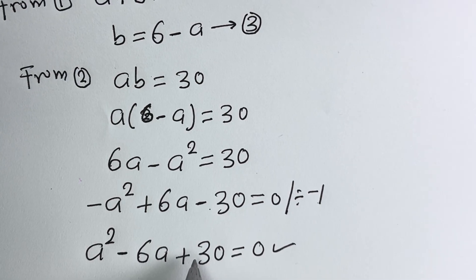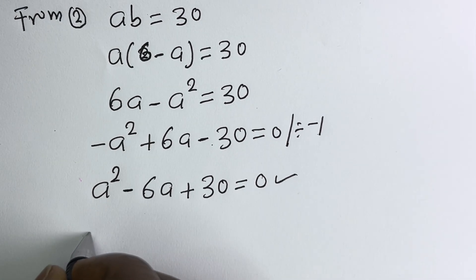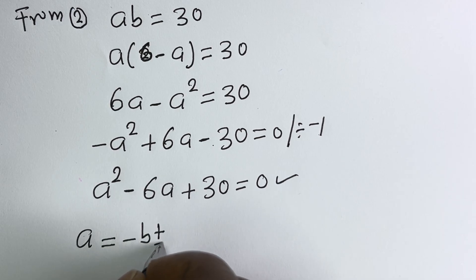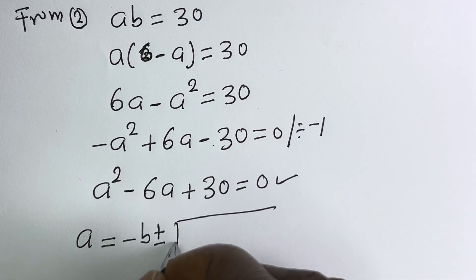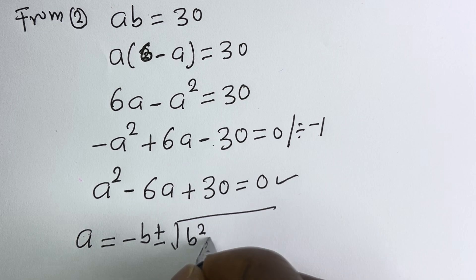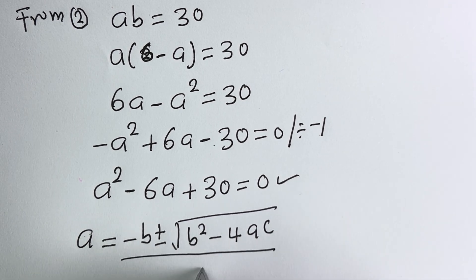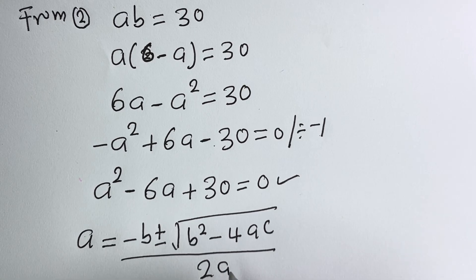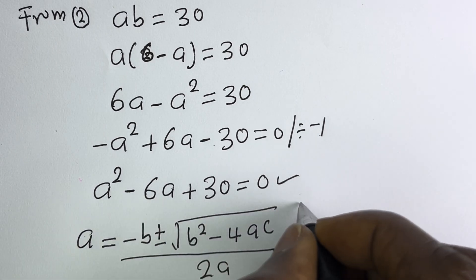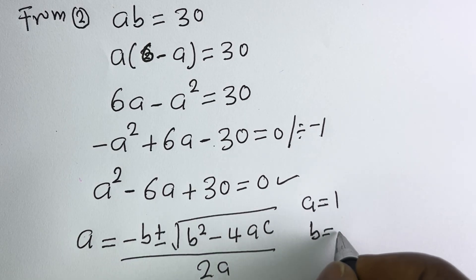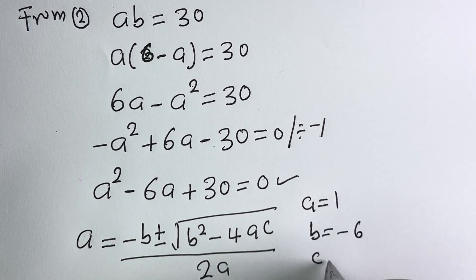Let's solve this using the quadratic general formula: A equals minus B plus or minus square root of B squared minus 4AC, all over 2A. From this equation, a is equal to 1, b is equal to minus 6, and c is equal to 30.